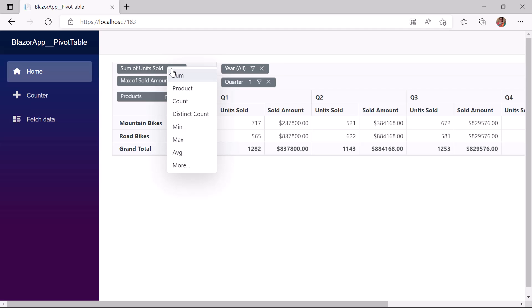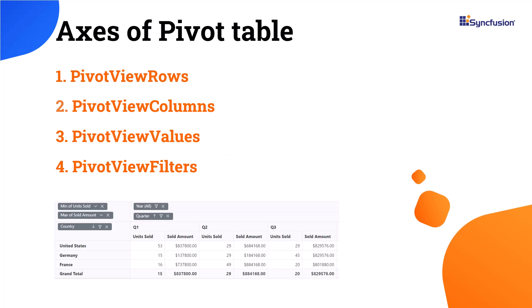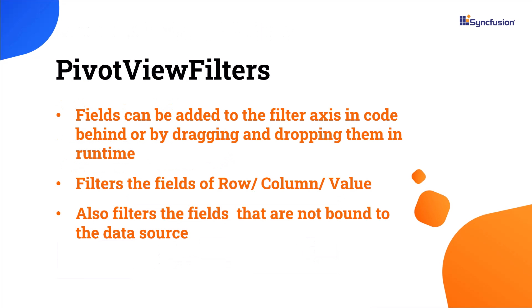I can also change the summary type of value fields using the grouping bar. Apart from rows, columns, and values axes, there is one more axis called the PivotView Filter axis. You can add fields to it either through the PivotViewFilters code or by dragging and dropping them. This axis filters the row, column, and value fields, and also filters records based on fields not bound to the pivot table.